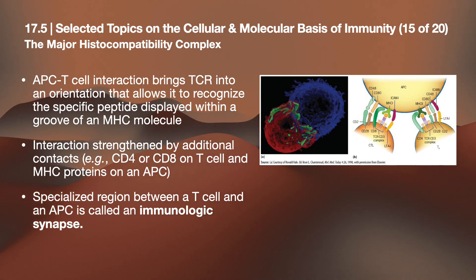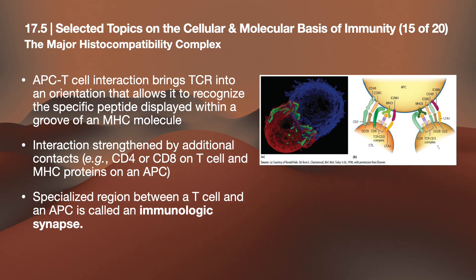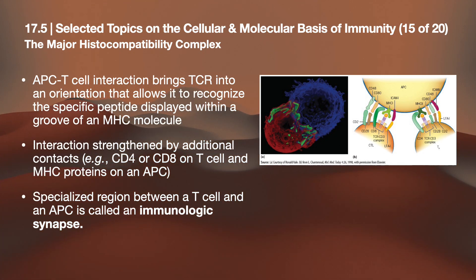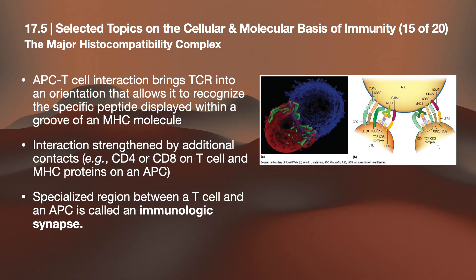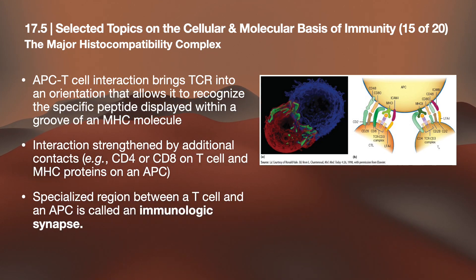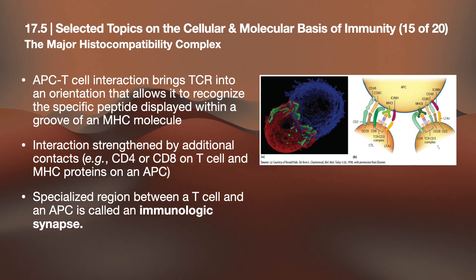The specialized region between a T cell and an APC is called an immunological synapse — analogous to the nervous system's synapses. This is shown in both a schematic and fluorescence microscopy, with the APC shown in red and the TCRs of the T cell shown in green.